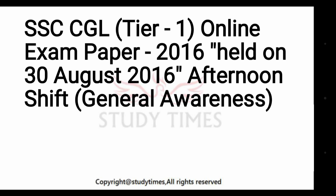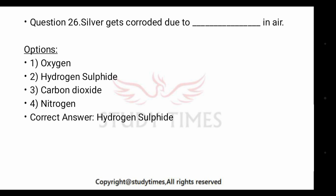Now I'll discuss the questions of general awareness of 30th August, afternoon shift. First question: silver gets coated due to dash in air — what is in the air that coats silver? The answer is hydrogen sulfide. Due to trace amounts of hydrogen sulfide in the atmosphere, silver forms a film of silver sulfide, which is black, causing it to appear coated.